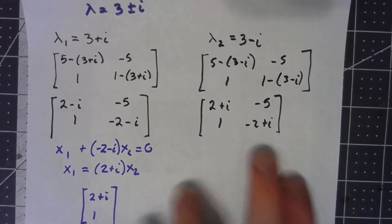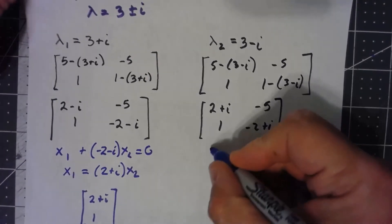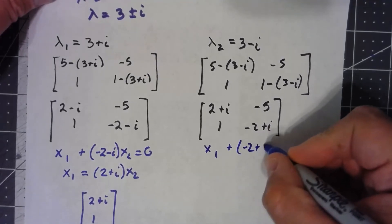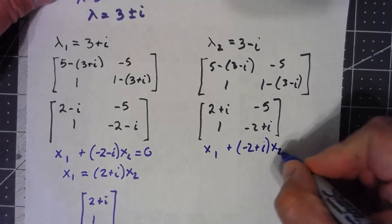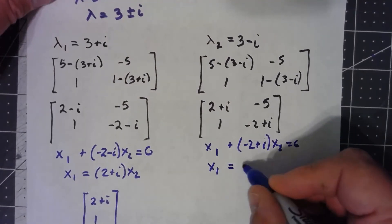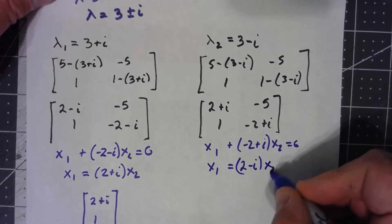So I'll just take that bottom row, change that to an equation, x1 plus negative 2 plus i, x2 equals 0. So x1 is going to equal 2 minus i, x2.